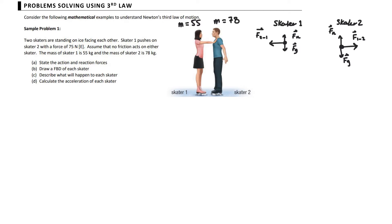Based on the third law of motion, whenever there is a force, there's always a paired force. When she puts a force this way, there's a force acting on her backwards. Now that we have the diagram, we can see that forces in the vertical directions are balanced. The forces in the horizontal direction for Skater 1 are in the left direction, meaning she'll accelerate west. For Skater 2, the forces are unbalanced to the right, meaning Skater 2 will accelerate east.